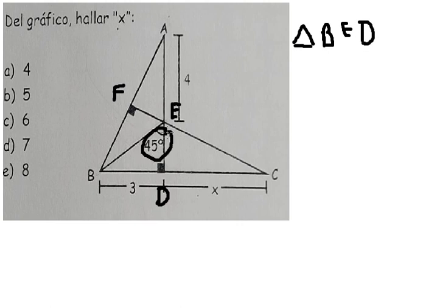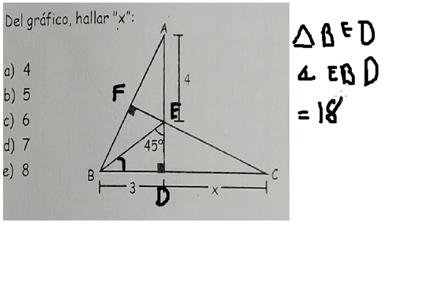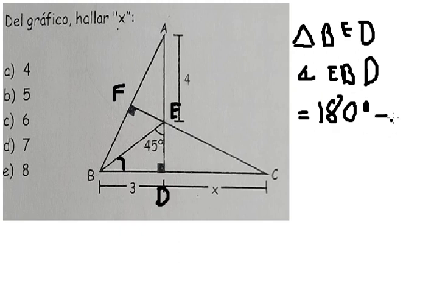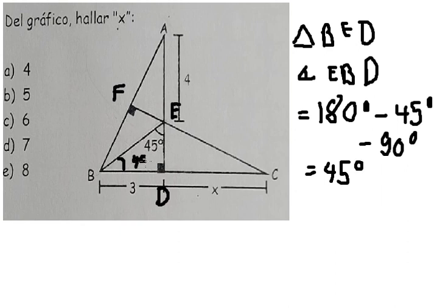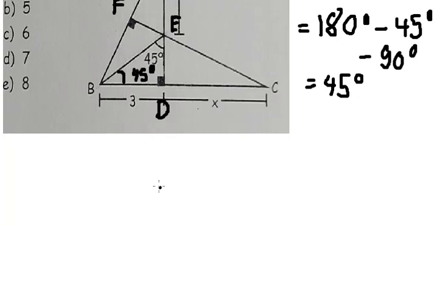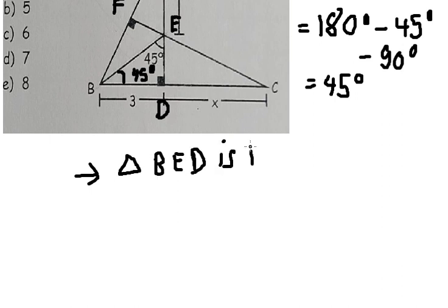We see that we have 45 degrees and this is a right angle. So we can find the angle EBD. The total of three angles in one triangle is 180 degrees. We need to minus 45 degrees and 90 degrees, so we have 45 degrees. We see that we have two angles of 45 degrees, which means triangle BED is isosceles.